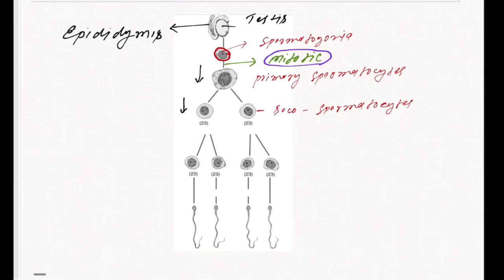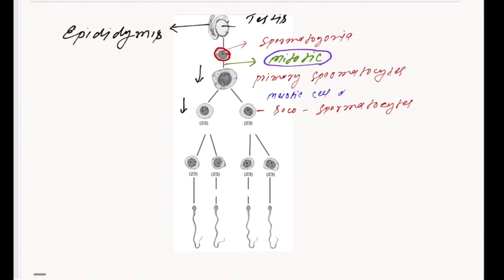When there is differentiation in the primary spermatocytes, they get converted into secondary spermatocytes with the help of a special type of cell division that is called meiotic cell division.